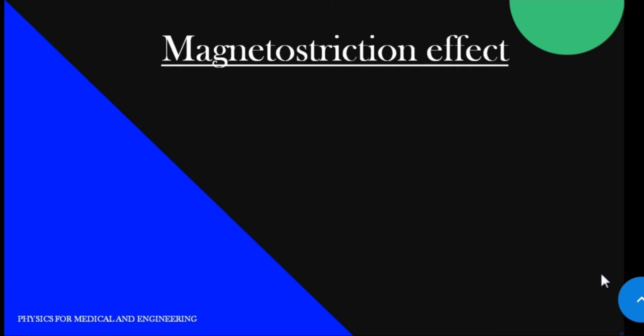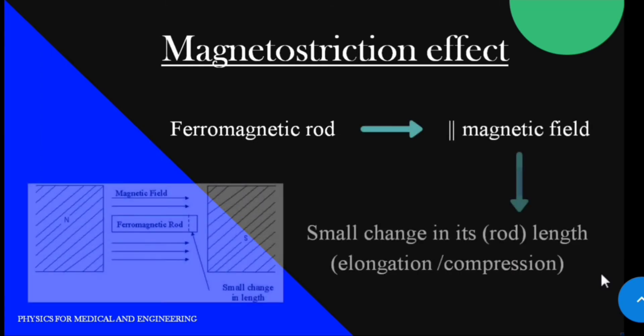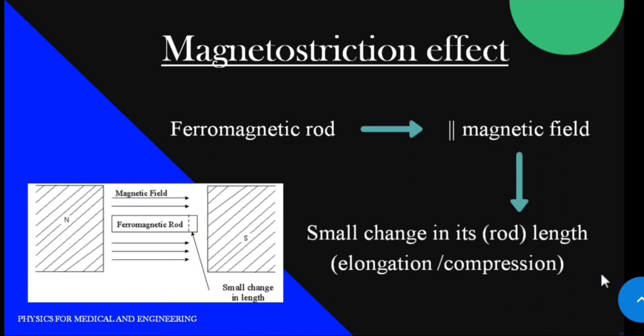This oscillator works on the principle of magnetostriction effect. The principle is: when a ferromagnetic rod like iron or nickel is placed in a magnetic field parallel to its length, the rod experiences a small change in its length, that is either in the form of elongation or compression.